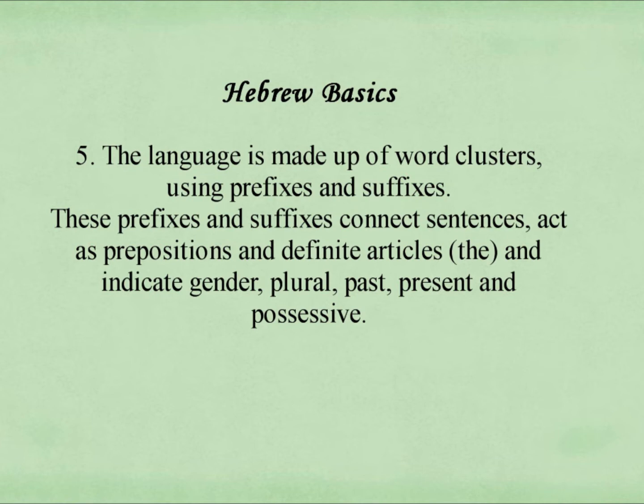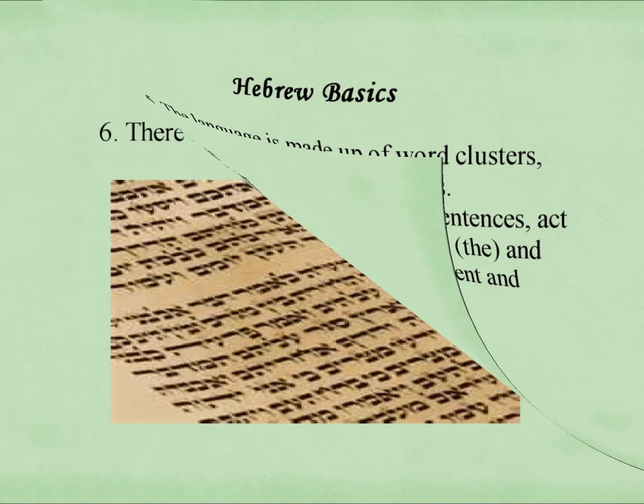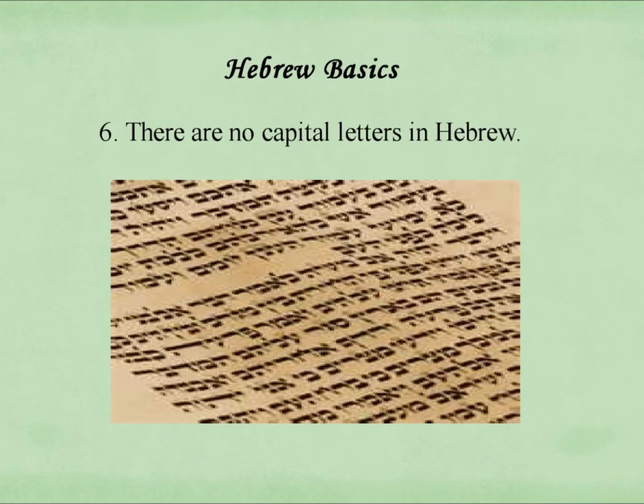These prefixes and suffixes connect sentences, act as prepositions and definite articles such as 'the,' and indicate gender, plural, past, present, and possessive. Number six: there are no capital letters in Hebrew.